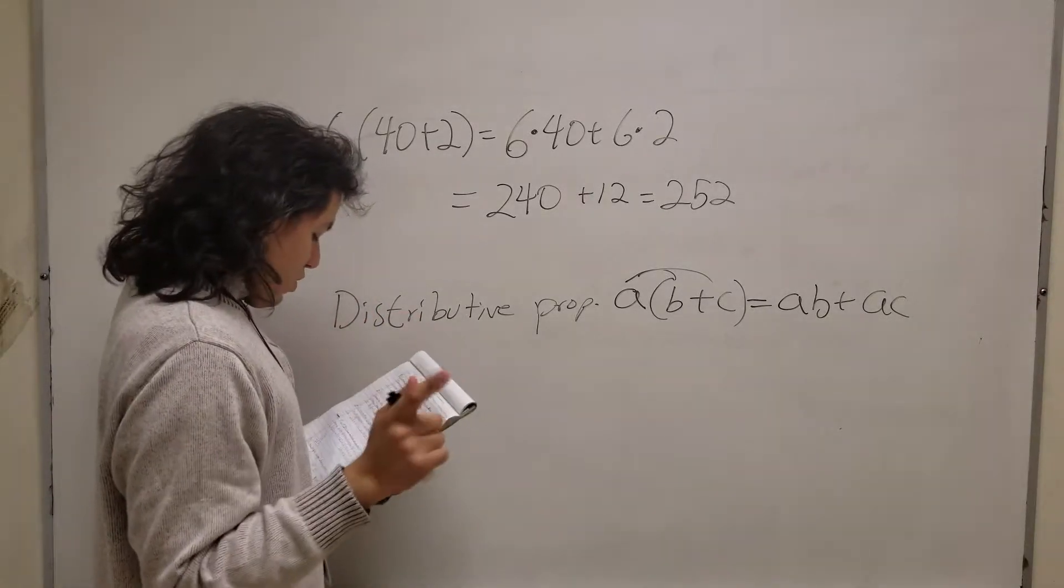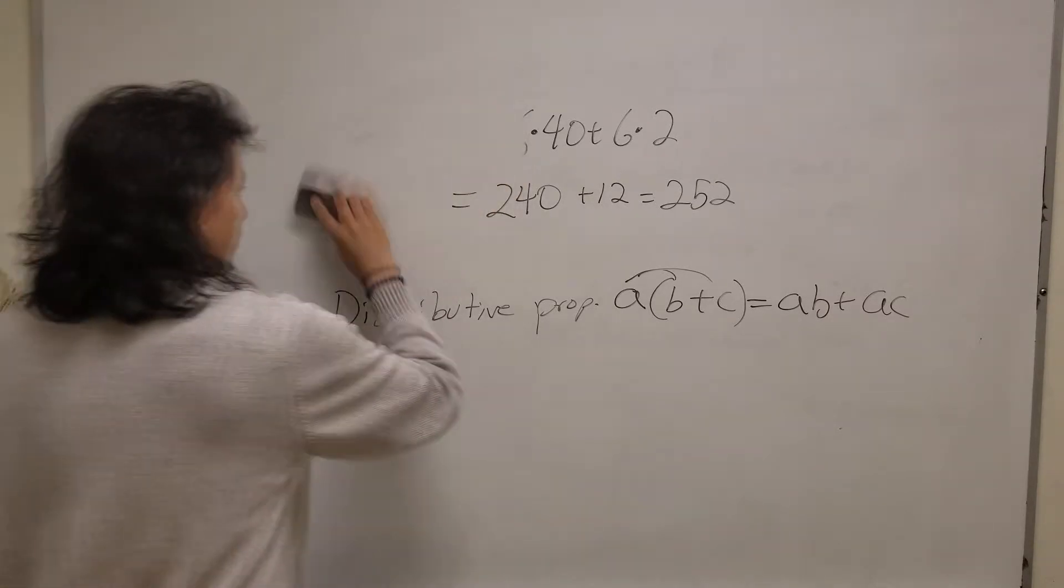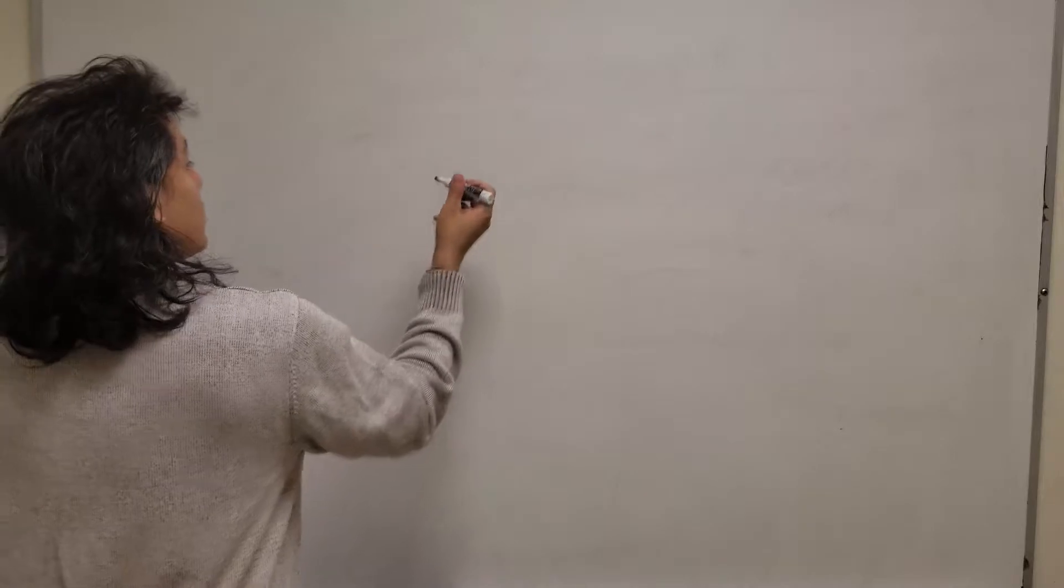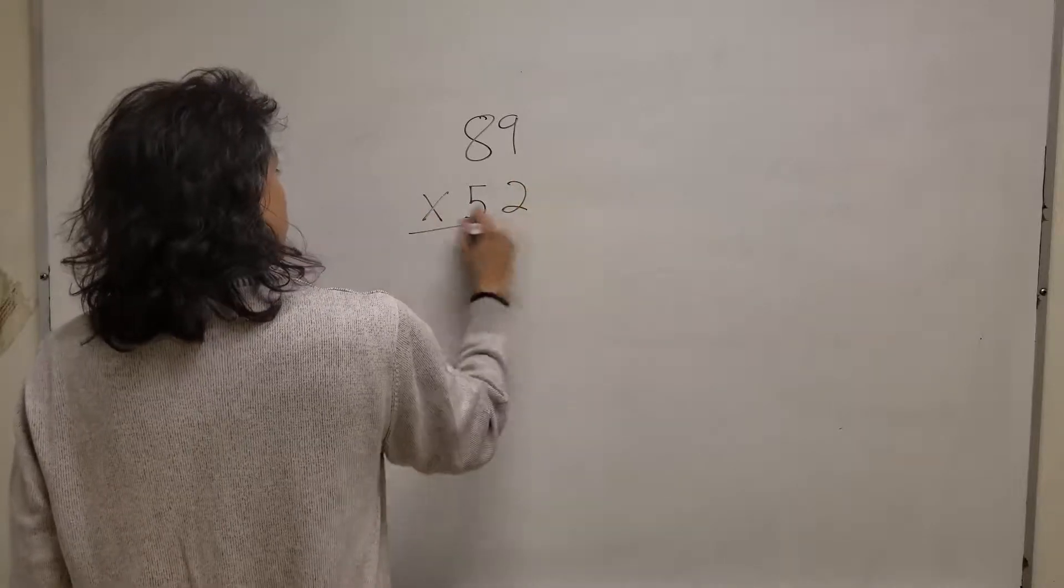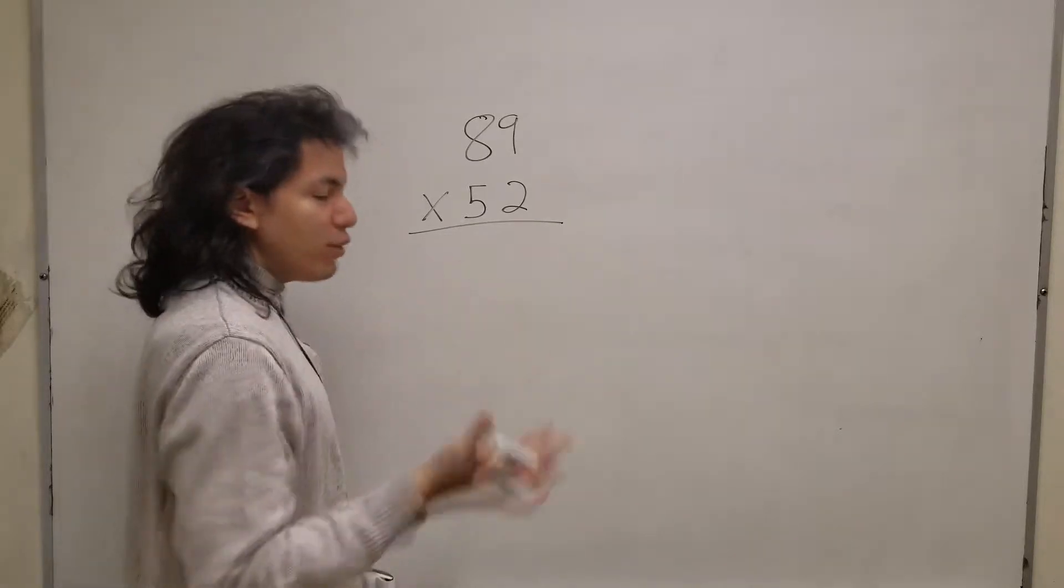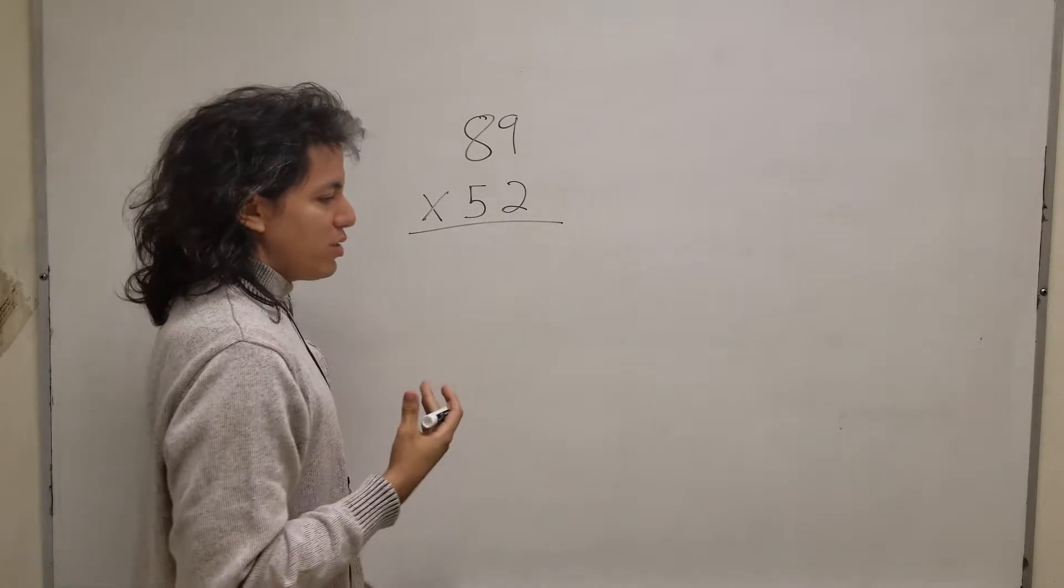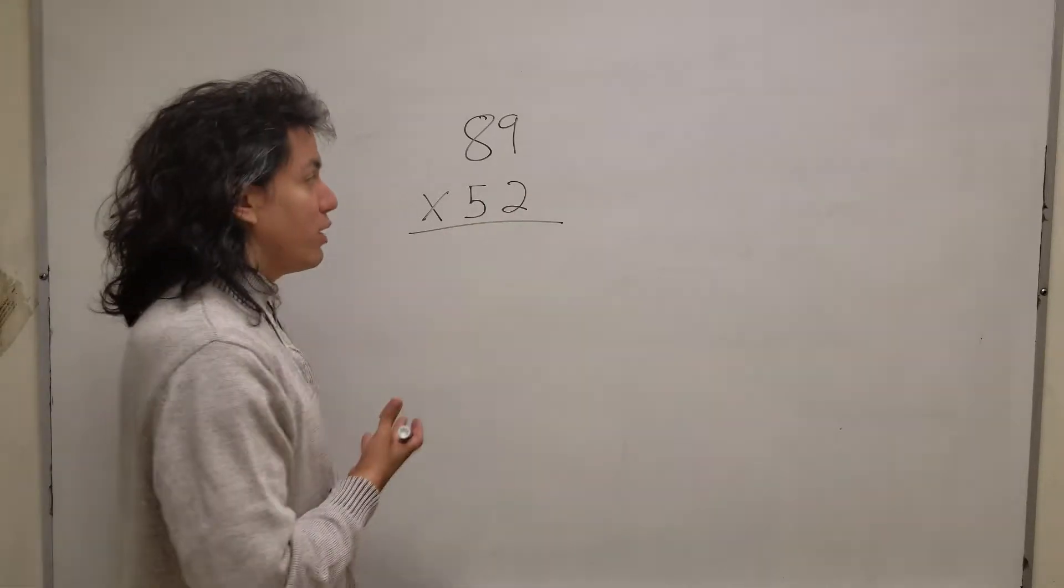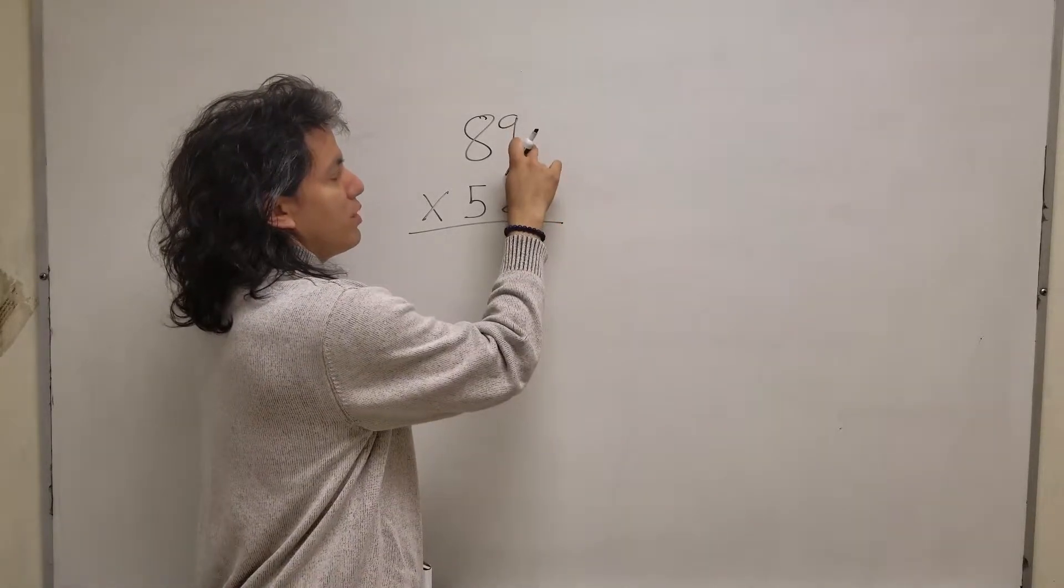But now let's talk about multiplying larger numbers. Let's say for instance I had 89 times 52. Well depending on how you were taught, there's always different ways how people learn how to do multiplications. They use lattice points, a lattice grid, or they would use what I was using when I was taught here in America, which was we multiply the first digit into this digit here in the ones place and then you do in the tens place and you continue.